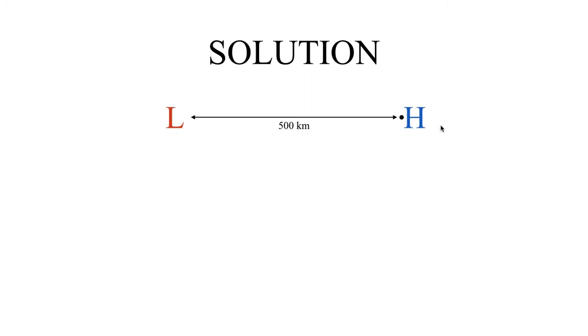We have a low pressure system here, which is 1005 millibars, and a high pressure system here, which is 1015 millibars, separated by a distance of 500 kilometers. What we're interested in is what this air parcel speed is going to be halfway between the two systems.